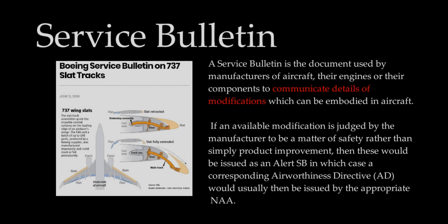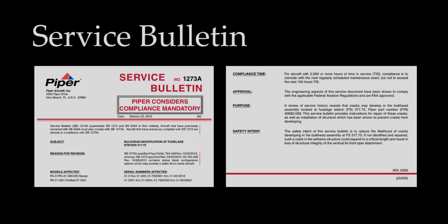A Service Bulletin, also known as SB, is a notice to an aircraft operator from a manufacturer informing him or her of a product improvement. Service bulletins often result in the issuance of Airworthiness Directives by the FAA. An Airworthiness Directive references the Alert Service Bulletin as a way of complying with the AD. Here is an example of a Service Bulletin.